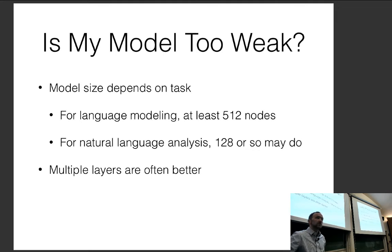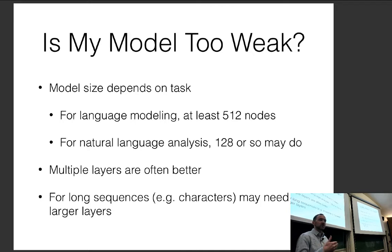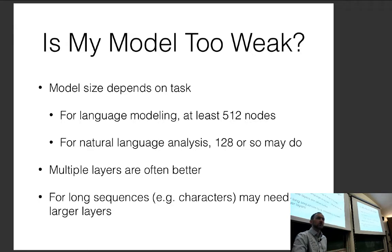Multiple layers will often do better than a single layer. Also, for long sequences — if you're training a character-based language model — you actually need a bigger model. This seems counterintuitive since there are fewer characters, but a character-level language model must not only predict the next word but also remember what position you are in the current word and how to compose characters into a word. Empirically, people have found you need more capacity in character-level language models.